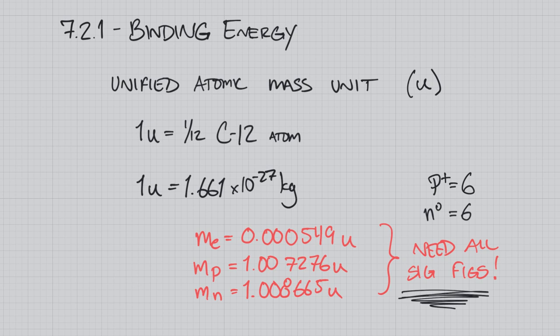Basically what they did is they took a carbon-12 atom and divided it into 12 equal pieces. So one-twelfth of a carbon-12 atom is one U, or one unified atomic mass unit. That value is going to equal 1.661 times 10 to the negative 27th kilograms.